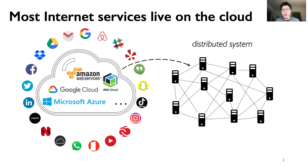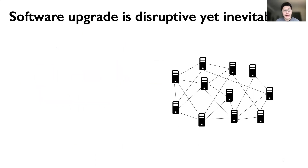Today, most internet services live on the cloud, such as Amazon AWS and other public and private clouds. These cloud systems are typically large distributed systems that are designed to be fault-tolerant and highly reliable. Unfortunately, even the most reliable cloud system has to go through software upgrades, which is one of the most disruptive maintenance tasks.